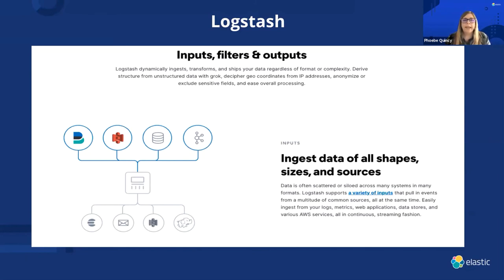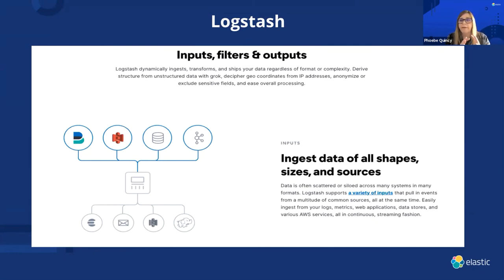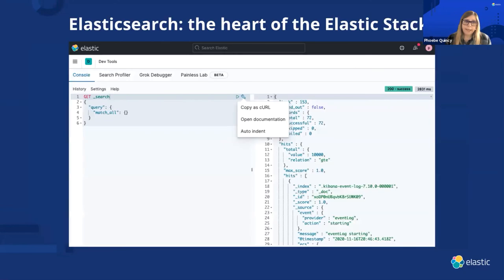What we're looking at is deriving structure from this data. We use things like Grok — if you have geo coordinates mixed up inside of an IP address, Logstash is the tool that separates that out so it can be indexed easily. Logstash then feeds that into Elasticsearch, and that's where it gets indexed.